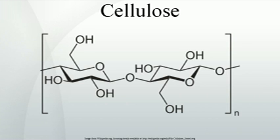With various chemical treatments it is possible to produce the structures cellulose III and cellulose IV. Many properties of cellulose depend on its chain length or degree of polymerization — the number of glucose units that make up one polymer molecule. Cellulose from wood pulp has typical chain lengths between 300 and 1700 units. Cotton and other plant fibers as well as bacterial cellulose have chain lengths ranging from 800 to 10,000 units. Molecules with very small chain length resulting from the breakdown of cellulose are known as cellodextrins; in contrast to long-chain cellulose, cellodextrins are typically soluble in water and organic solvents.